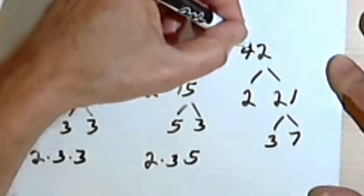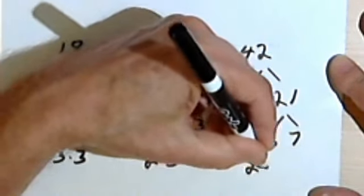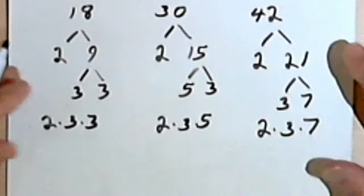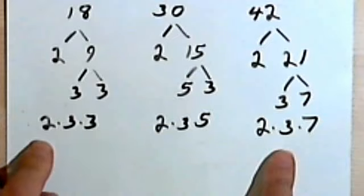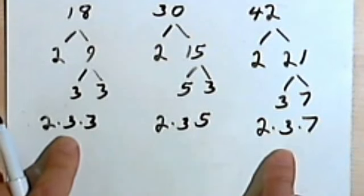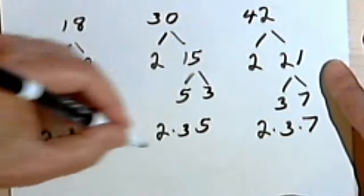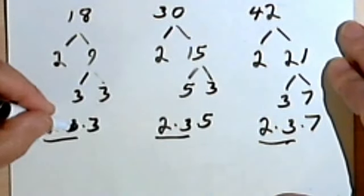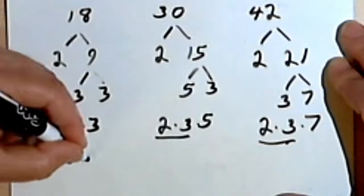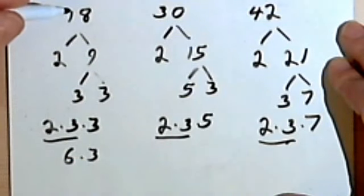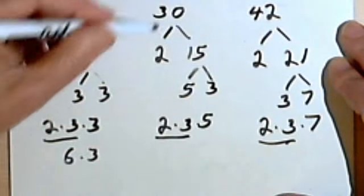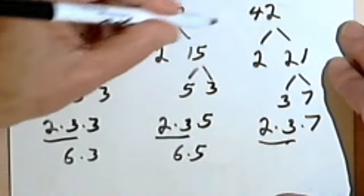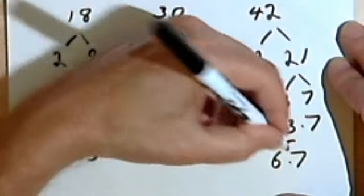So my factors for the 42 are going to be 2, 3, and 7. So now looking at these, I see that every one of my factored numbers has a 2 and a 3 in it. What that's basically going to mean is my common factor is 2 times 3 or 6. So instead of 18, I'll have 6 times 3. Instead of 30, I'll have 6 times 5. And instead of 42, I'll have 6 times 7. And now I'm ready to go back to the problem.